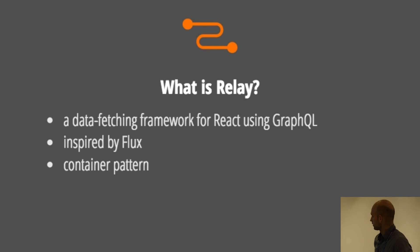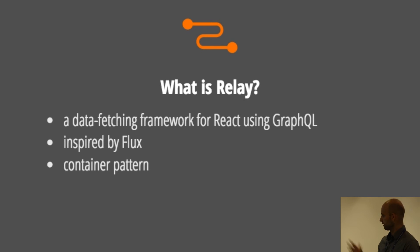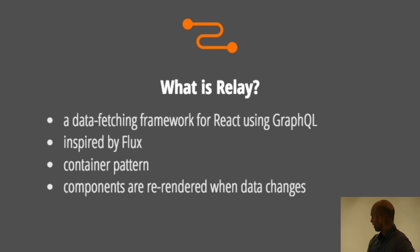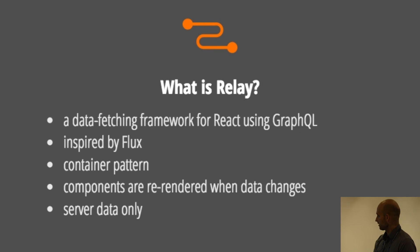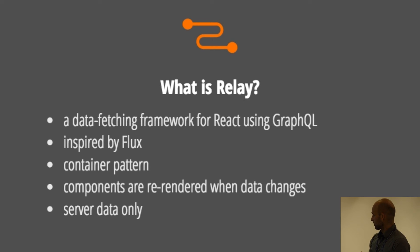Whenever you want to hook up a React component with data, you create a Relay container and tell the container what kind of data it wants, then put all the components inside. Components are re-rendered when data changes. A caveat is that it's only for server data — it's not like a Flux store where you can put anything inside and manipulate it whenever you want. You use those same declarative queries to query the Relay store, and the store will decide for itself whether it needs to query the server or give you a cached version.